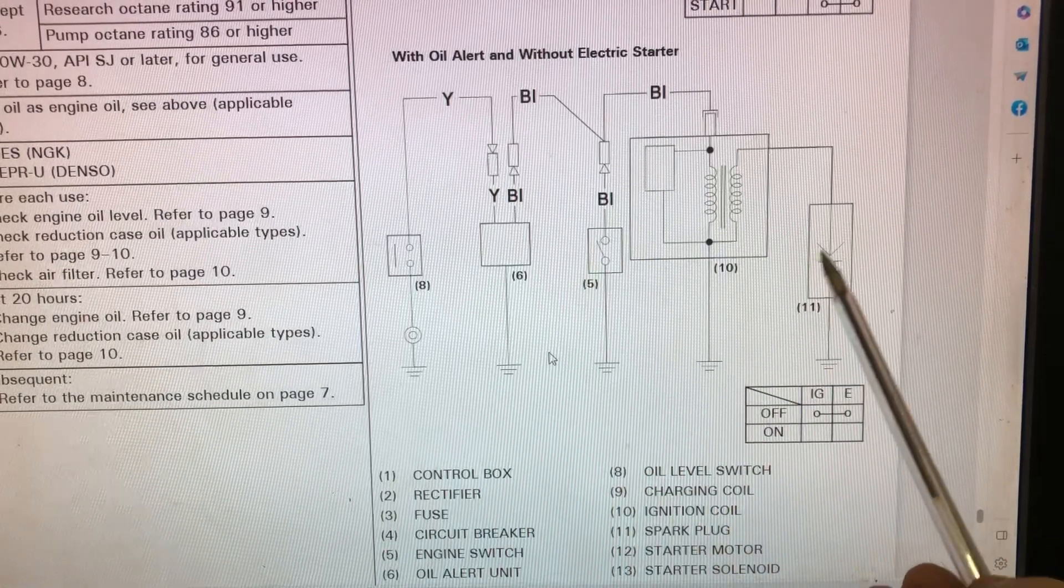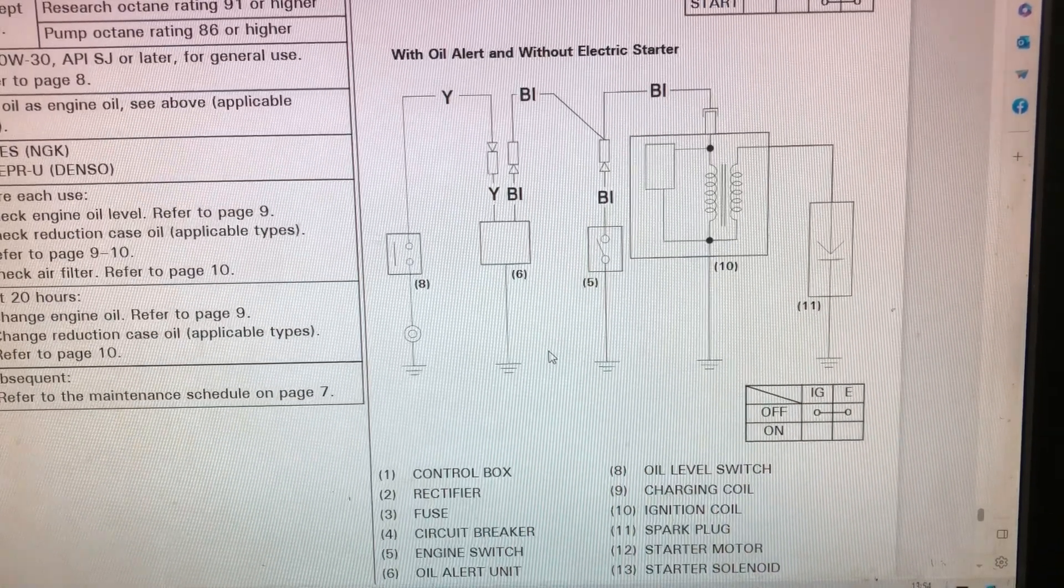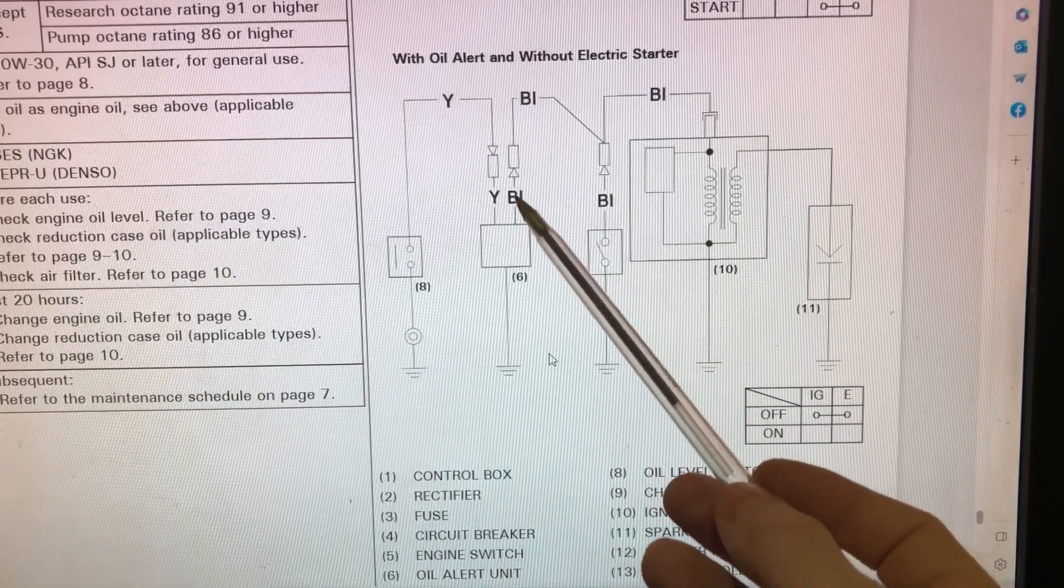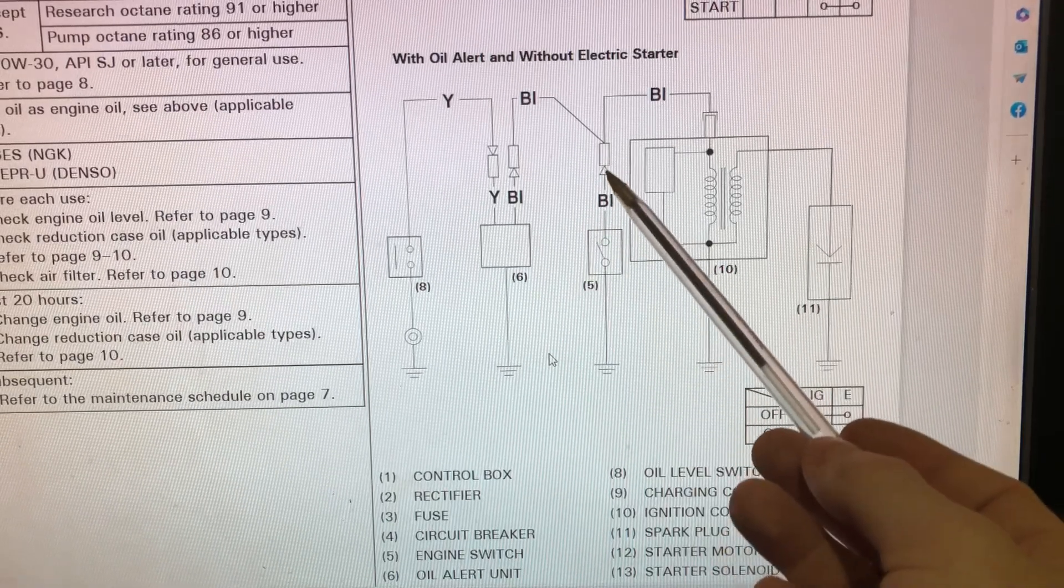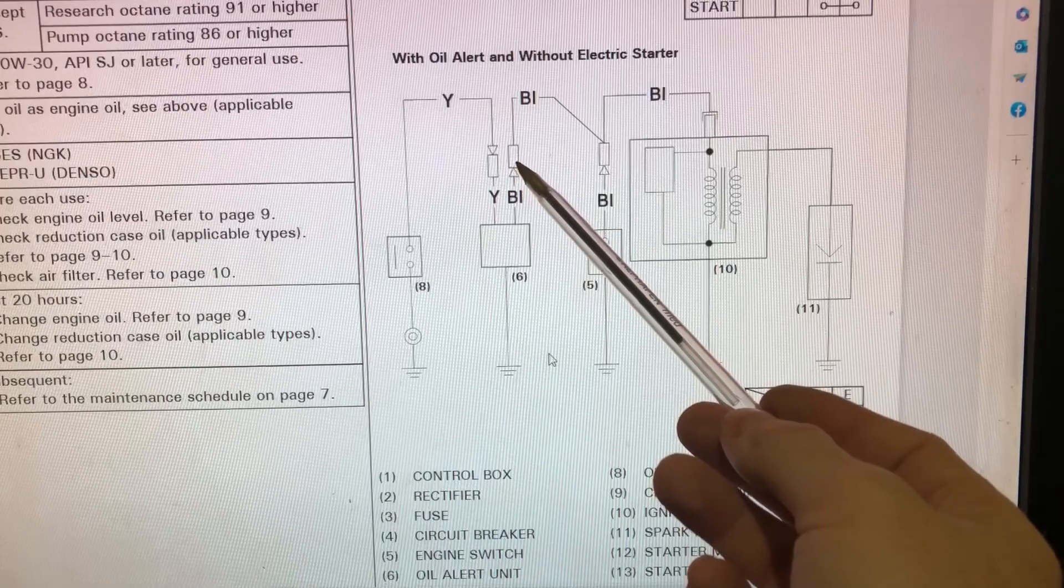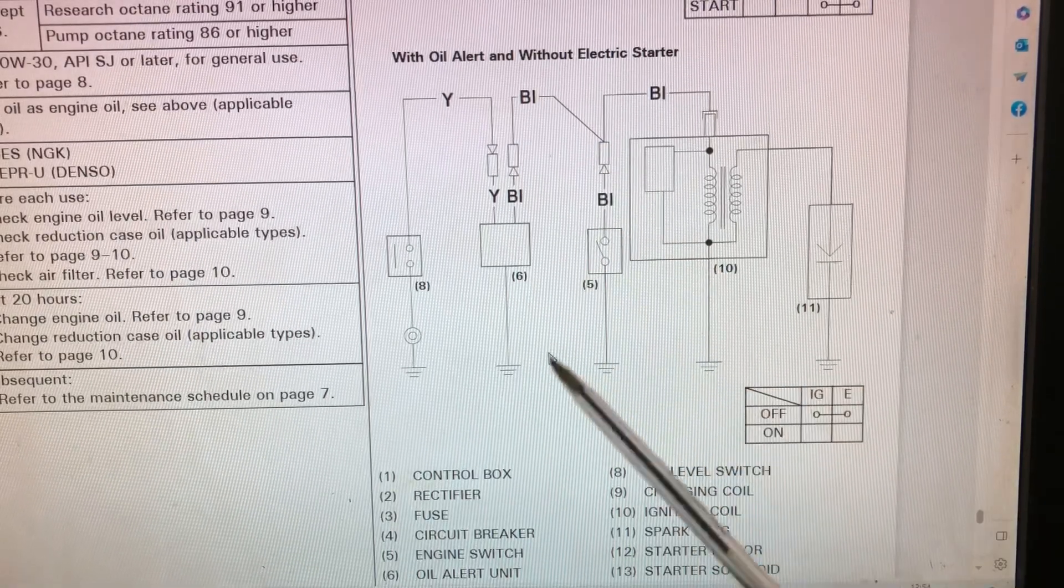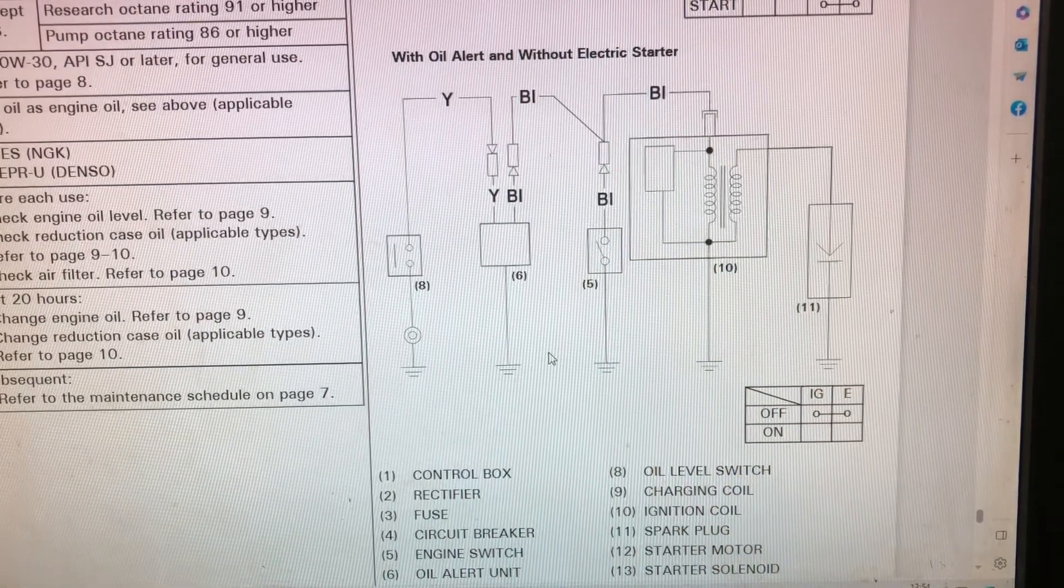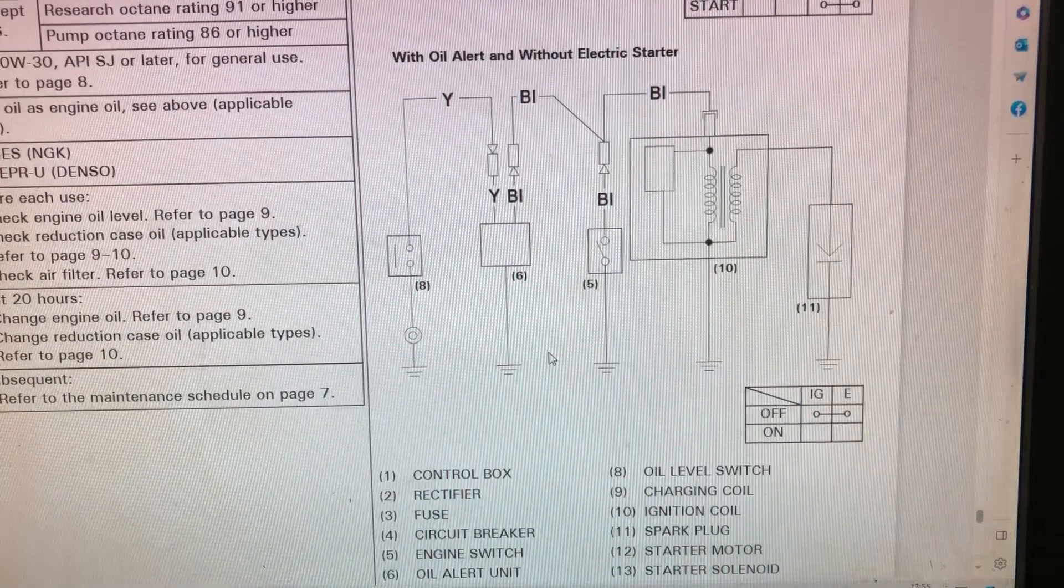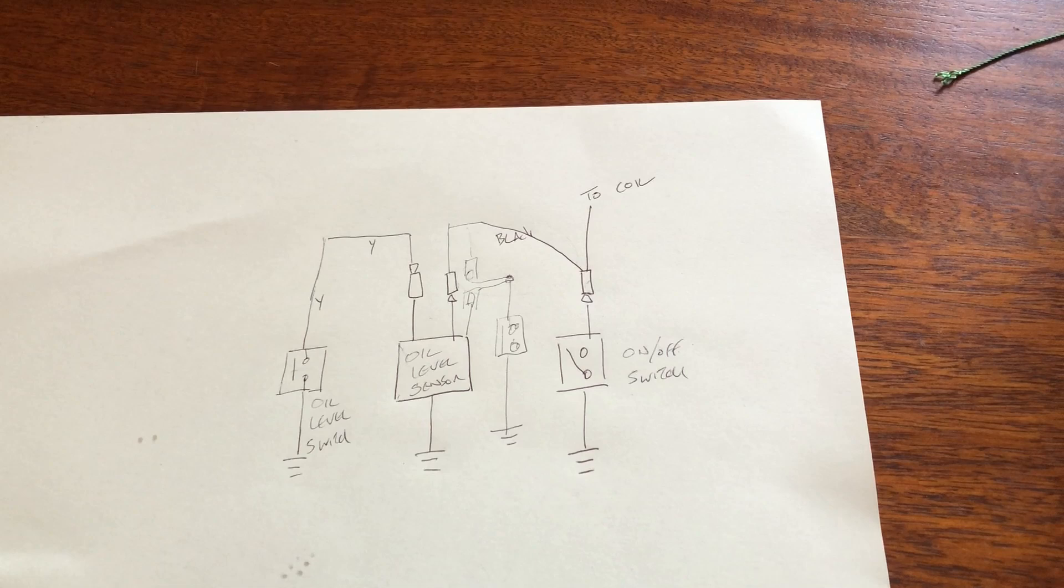Basically all you've got to do is somewhere in this circuit here, whether you do it at that connection or that connection, put an emergency stop between there and there and earth. This is simply done, but obviously you've got to choose the right emergency stop.